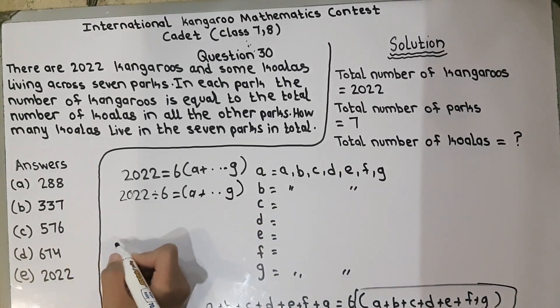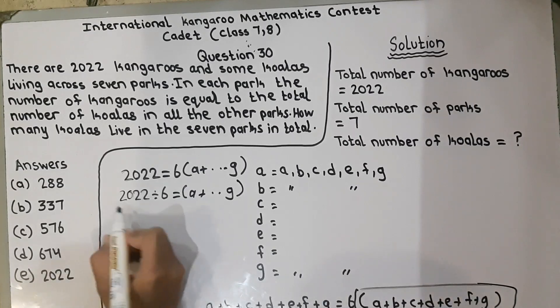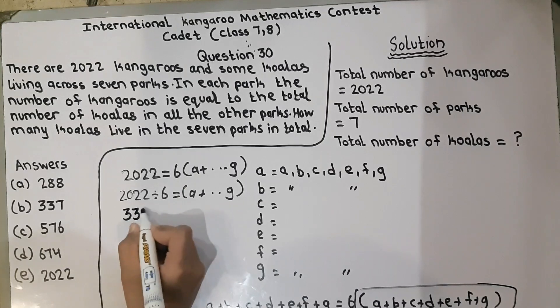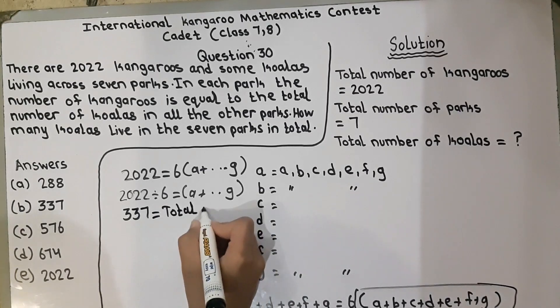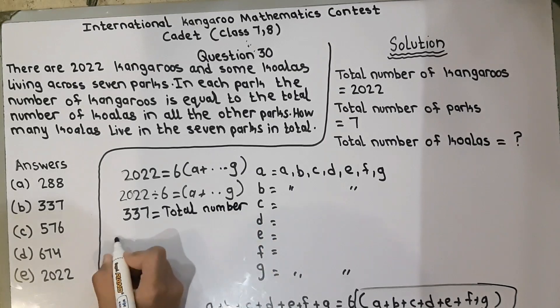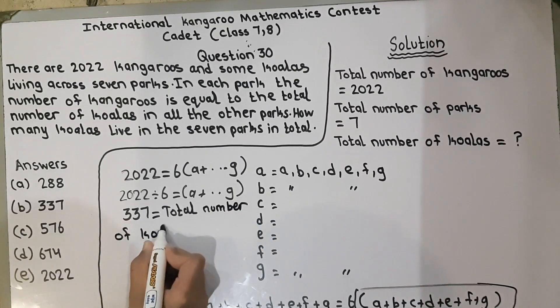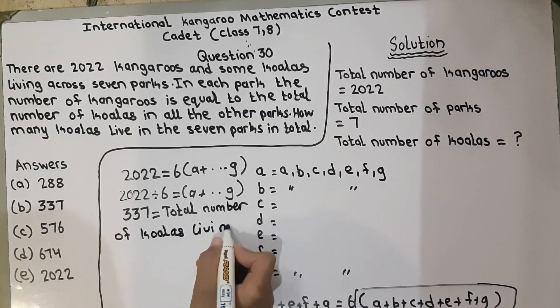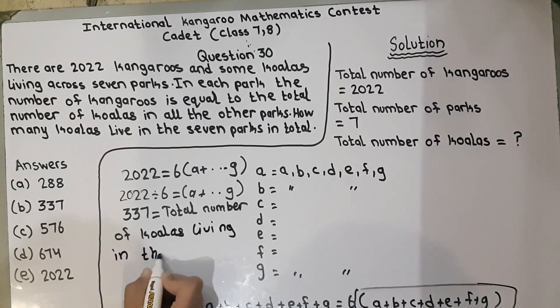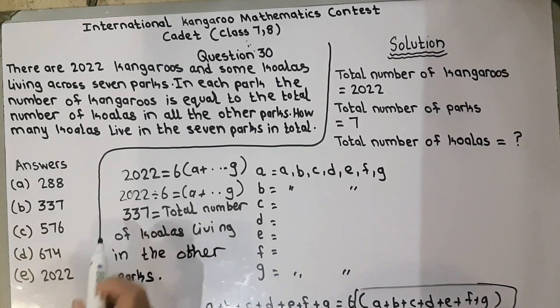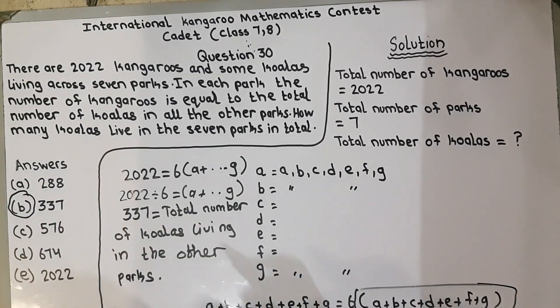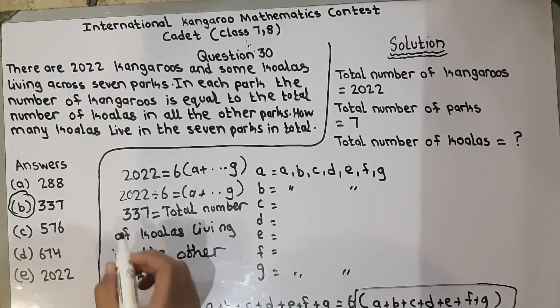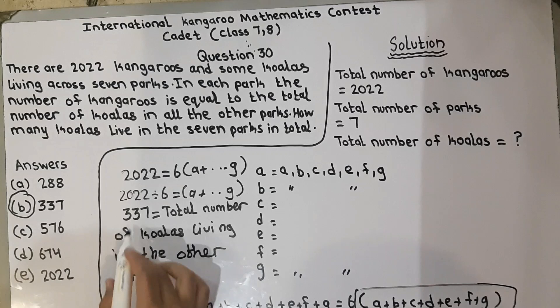When we divide it, the answer is 337. 337 is equal to total number of koalas living in the other parks. 337 is equal to the answer, and it is option number B, so we circle here. Hence the total number of koalas living in the other parks is 337.